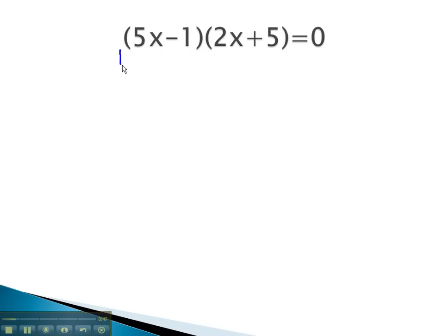In this problem, we have two factors, 5x minus 1 and 2x plus 5, that multiply to equal 0. This means one of the factors must be 0. So we write 5x minus 1 equals 0, or 2x plus 5 equals 0, and solve these two equations to find our solutions for x.